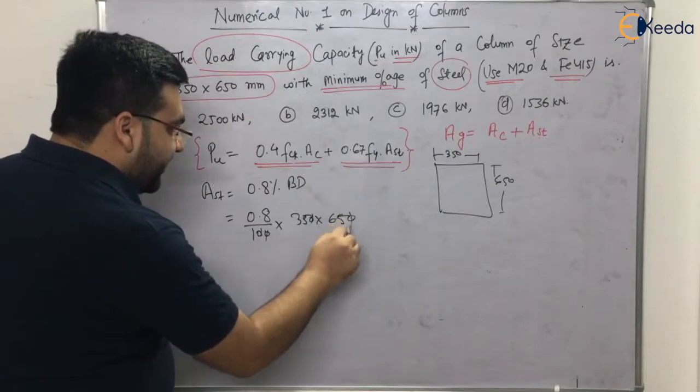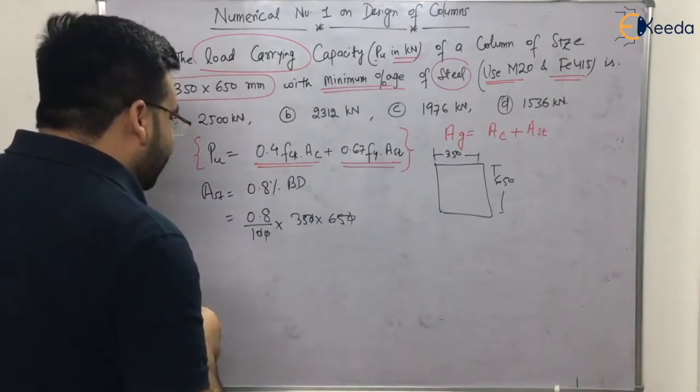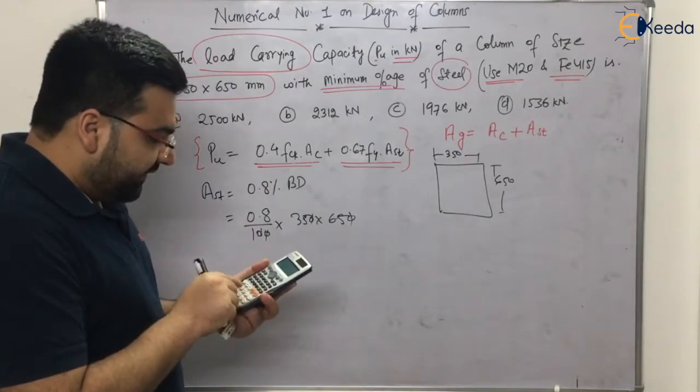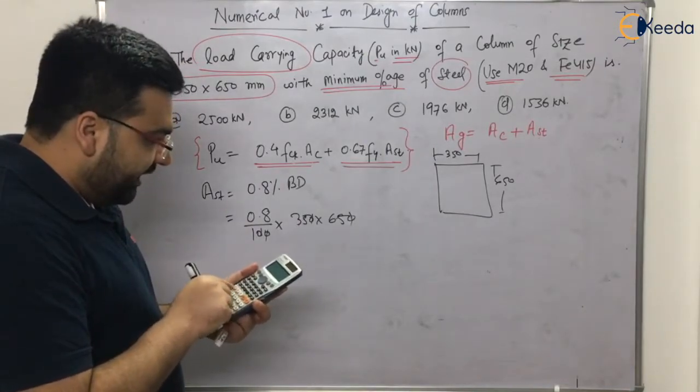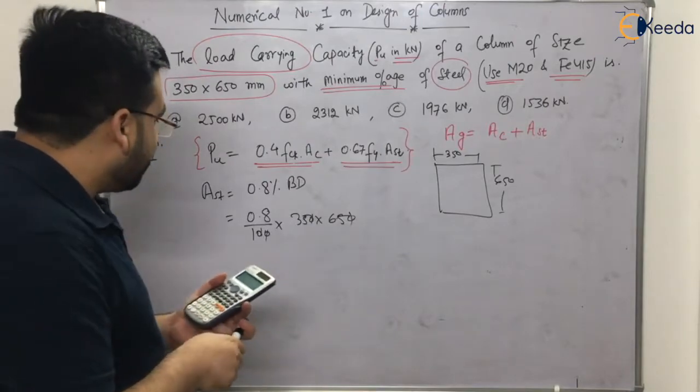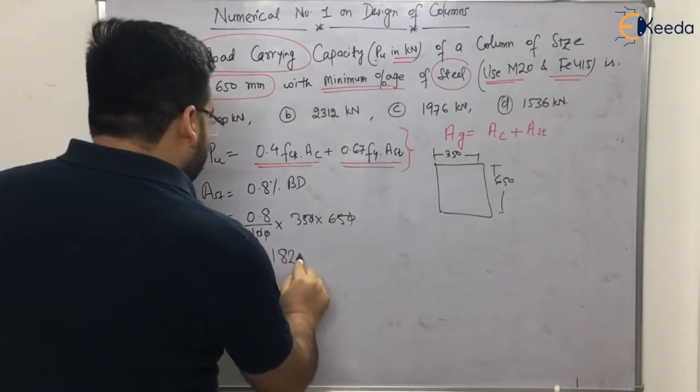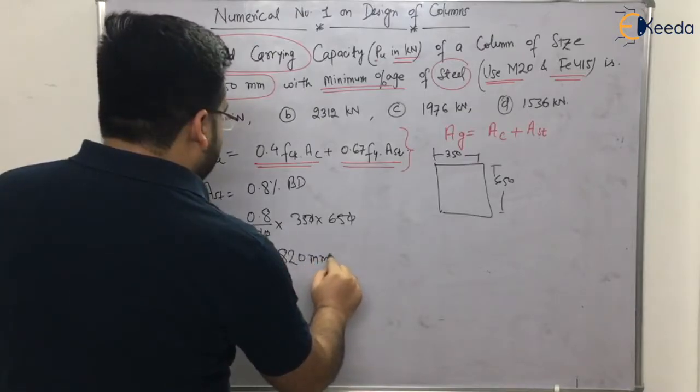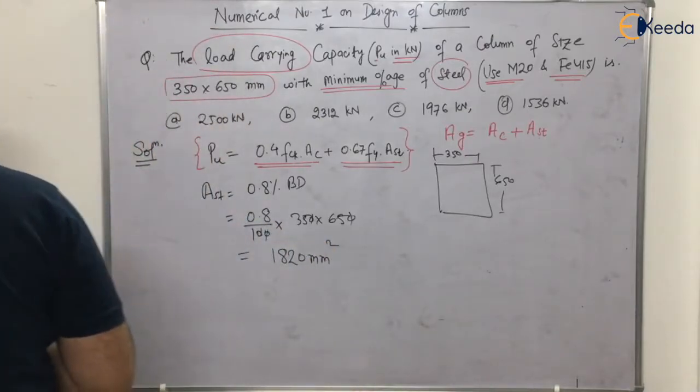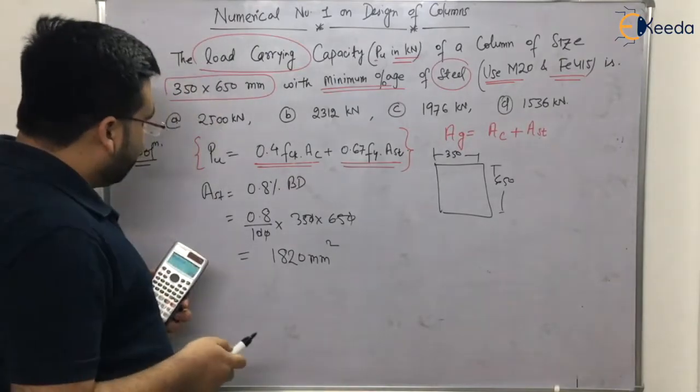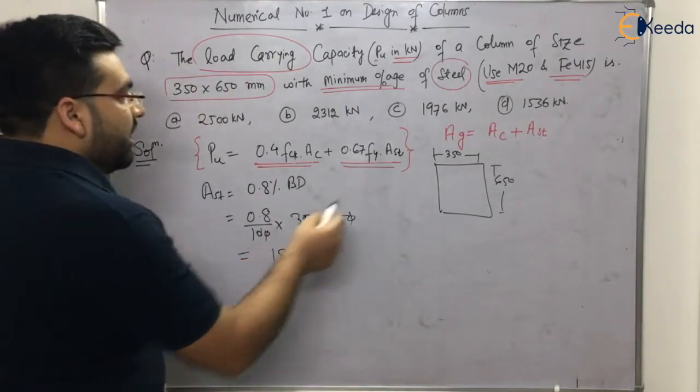So it will be equal to 350 into 650. It comes out to be 0.8 percent of 350 × 650. Let me calculate: 35 into 65 into 0.8, it comes out to be 1820 mm square.